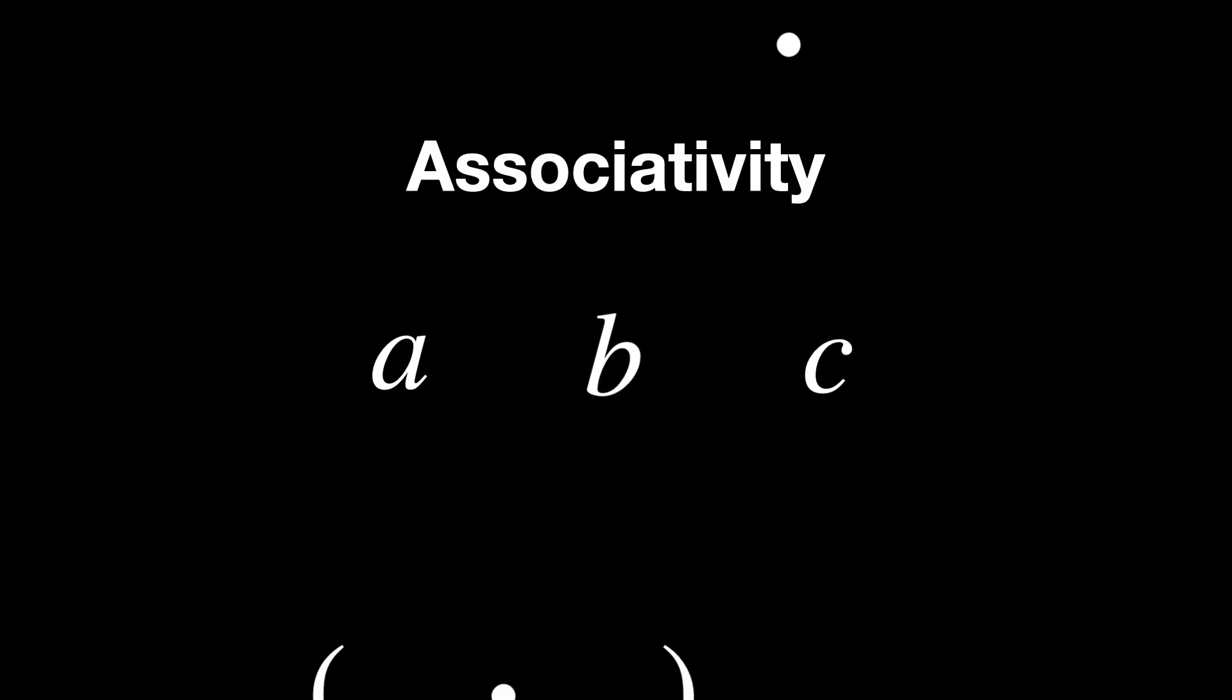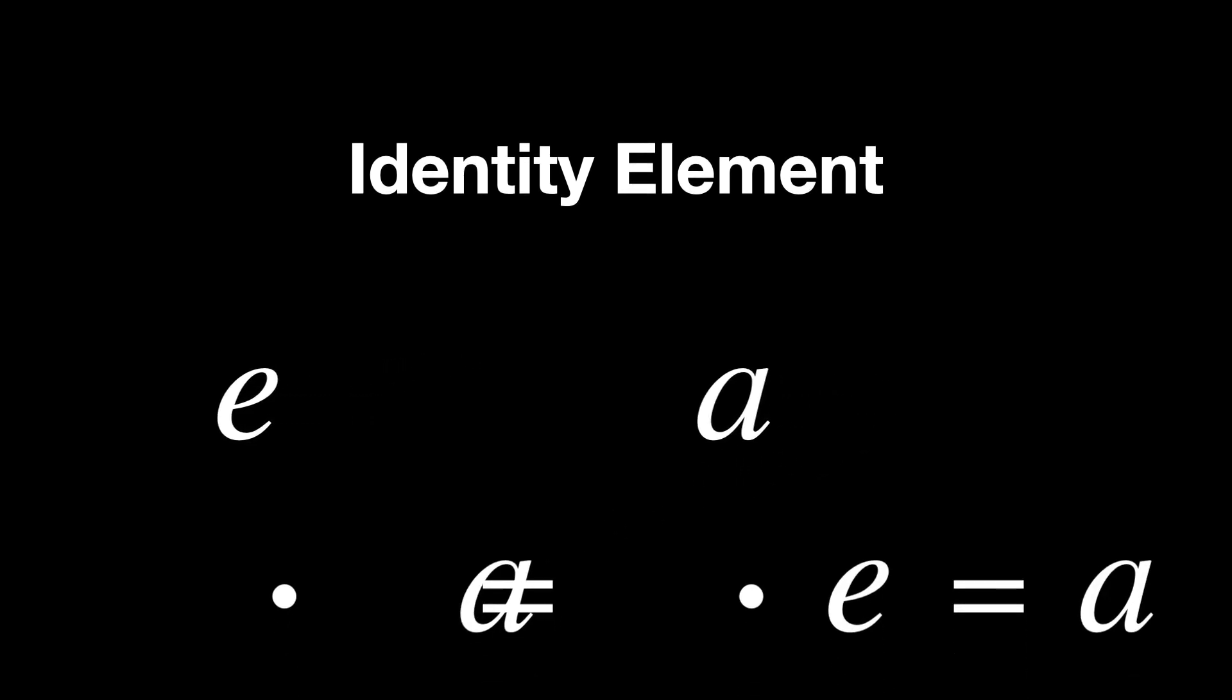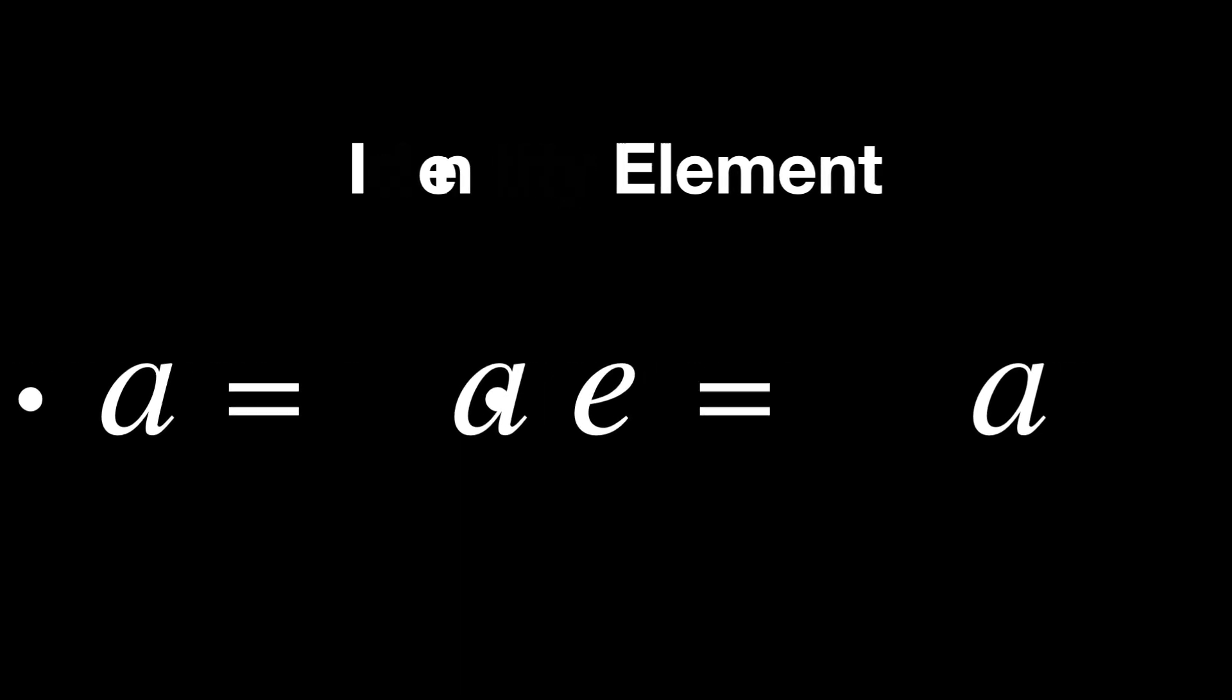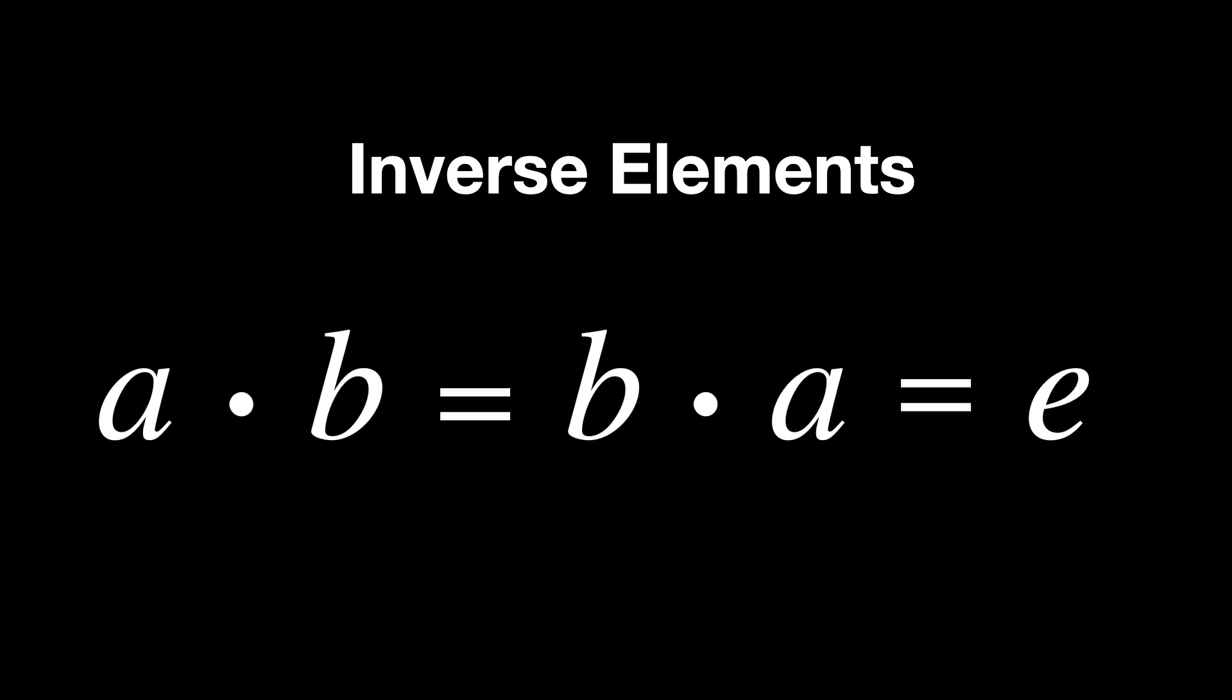A group is an algebraic structure consisting of a set of elements, or a well-defined collection of objects. For any two elements A and B in the group, the result of the operation A times B is also in the group. Associativity: For all A, B, and C in the group, the result of A times B times C is the same as A times the result of B times C. Identity element: There exists an element E in the group, such that for every element A, we have that E times A is the same as A times E, which is A. Inverse elements: For every element A in the group, there exists an inverse element B, such that A times B equals B times A, which is E, where E is the identity element.